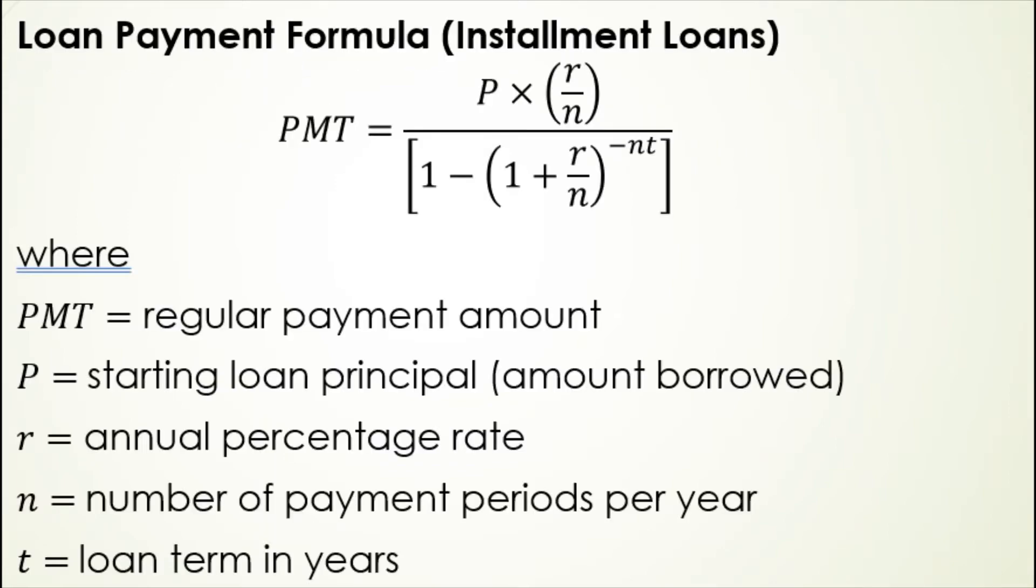The formula that we're going to use, this loan payment formula for installment loans, is given here. To figure out the amount of the payment, it's going to be equal to the starting principal times the annual interest rate divided by n, where n is the number of payment periods per year. This is usually going to be 12 because we usually talk about monthly payments for installment loans.